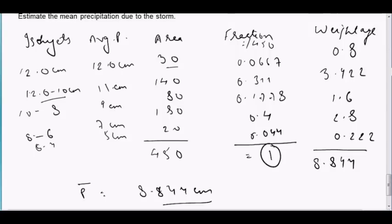And this is how you calculate the mean precipitation value using the isohytal method. Thank you.